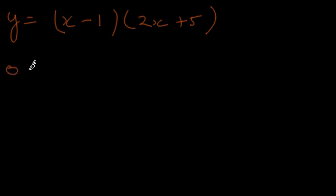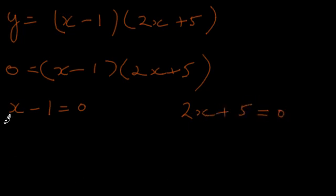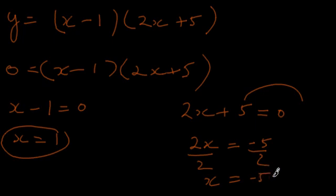Now we find the roots, which boils down to solving this equation. If (x minus 1) times (2x plus 5) equals zero, then one of these terms must be zero. So x minus 1 equals 0 means x equals 1 — that's one root. And for the second factor, 2x equals negative 5, so dividing through by 2, we get x equals negative 5 halves.